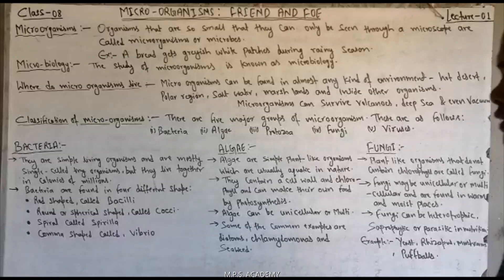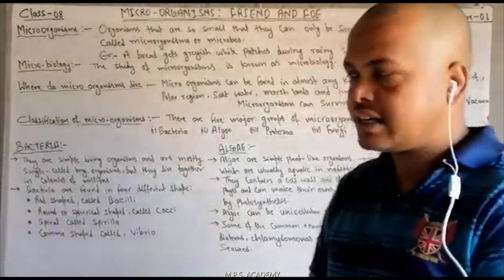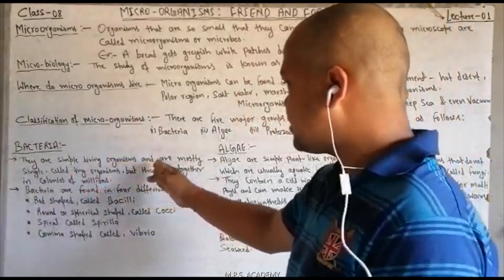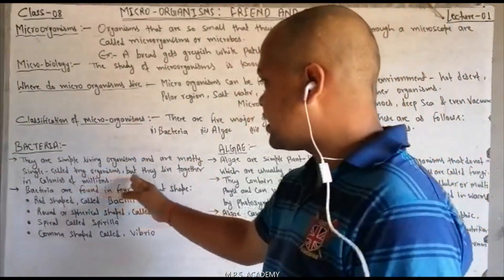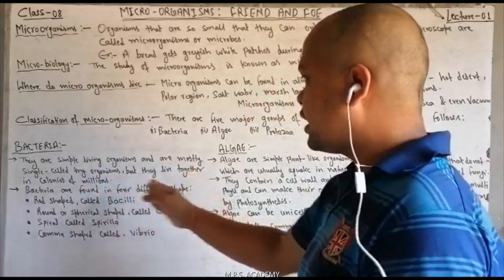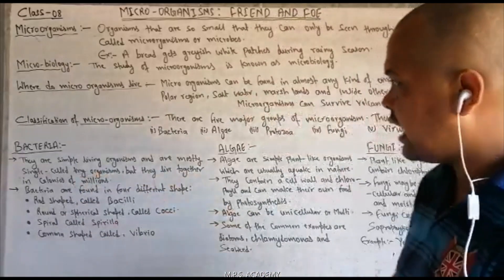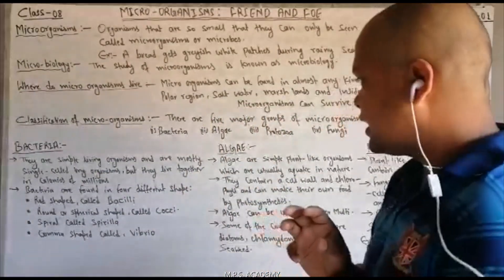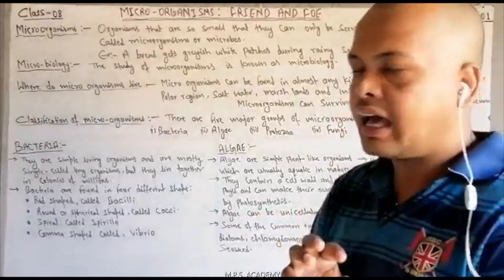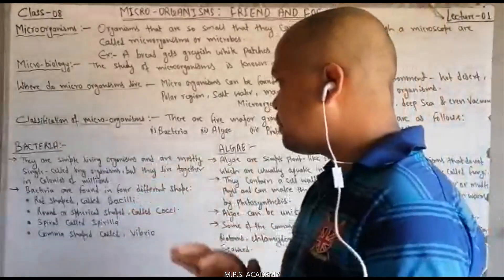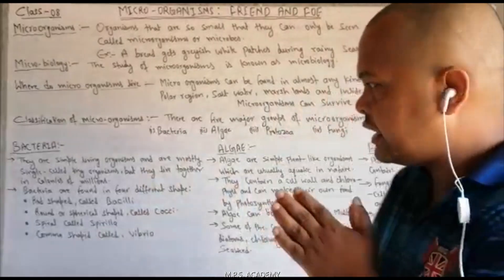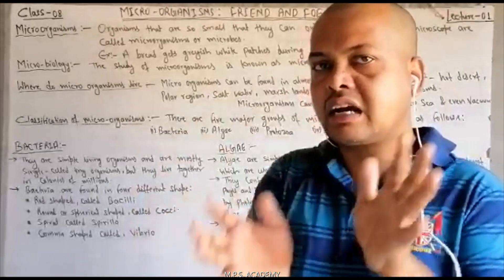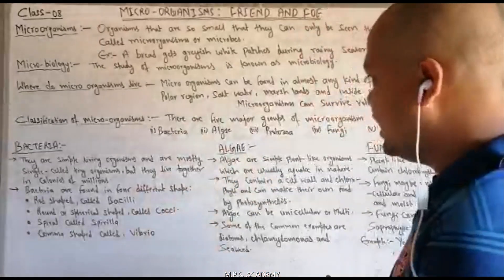Let's talk about bacteria. What is bacteria? They are simple living organisms and are mostly single-celled tiny organisms, but they live together in colonies of millions. Jo bacteria hote hain, woh simple living organisms hote hain, mostly single-cell hote hain, aur mostly colonies mein millions of bacteria ke saath paye jaate hain.